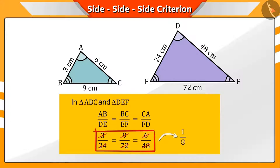You are absolutely correct. The ratios of the corresponding sides of both the triangles are 1 by 8.